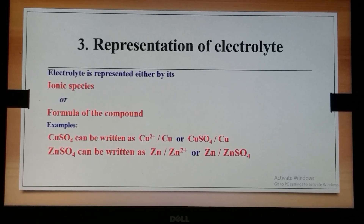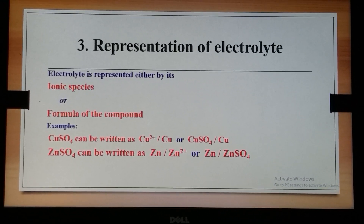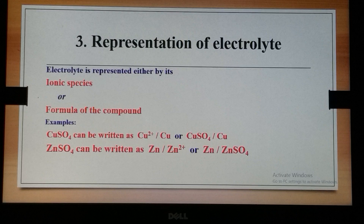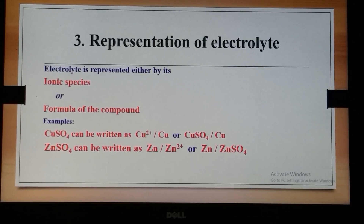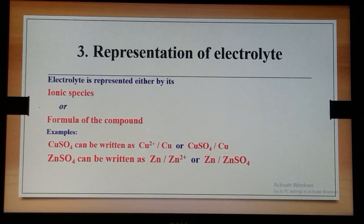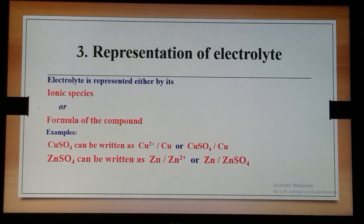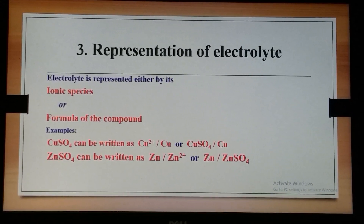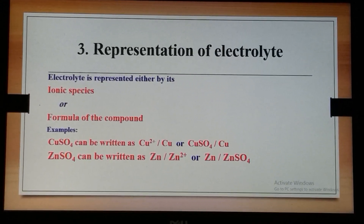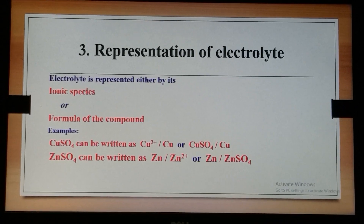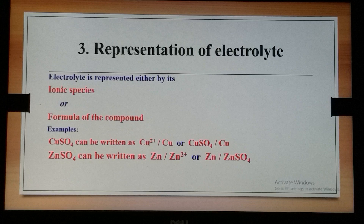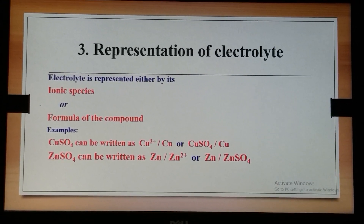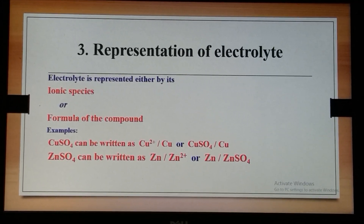For writing the electrolyte, we can either write the ionic species or the formula of the compound. For example, if we have a copper electrode immersed in copper sulphate and zinc in zinc sulphate, we can write Cu²⁺ or CuSO₄.